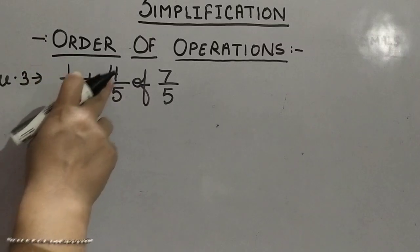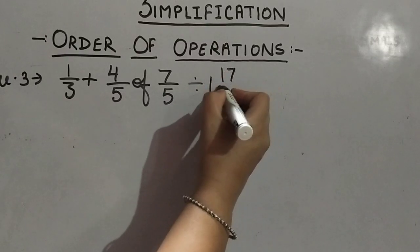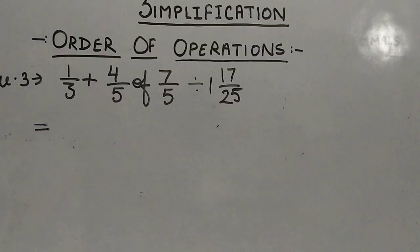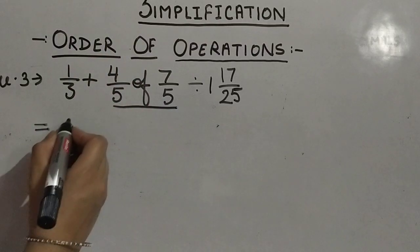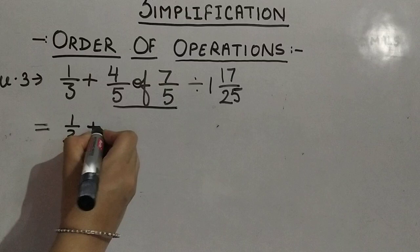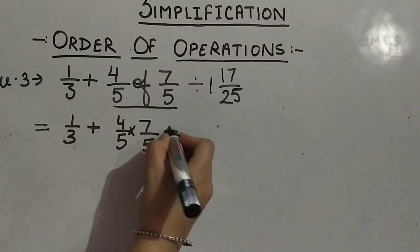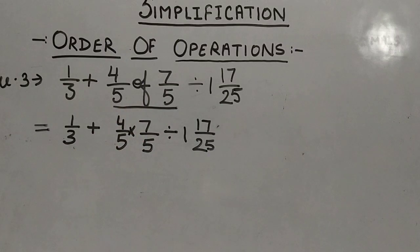Now example 3 is based on fractions: 1/3 + 4/5 of 7/5 ÷ 1 whole 17/25. In this we can recall all the rules of fractions as well. First step — brackets: there are no brackets. We move to O for 'of'. 'Of' is between 4/5 and 7/5, so we replace 'of' with a multiplication sign: 1/3 + 4/5 × 7/5 ÷ 1 whole 17/25.